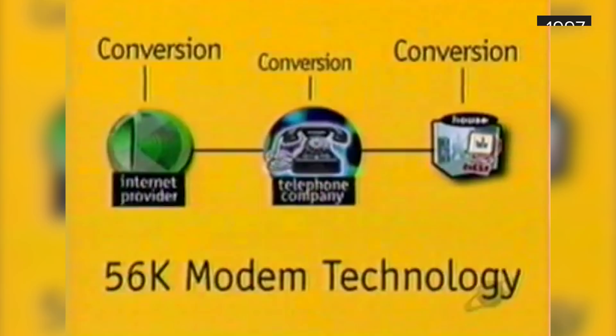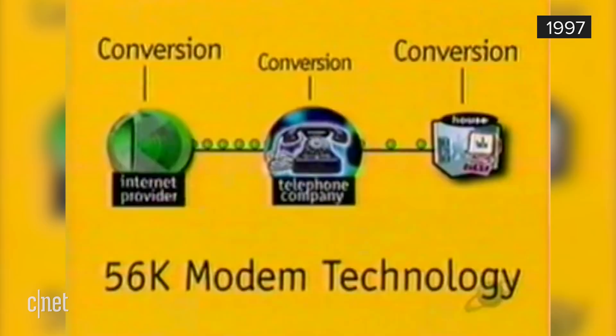This is the way information travels across the internet today. There are three different conversions from analog to digital signals between your internet service provider, your telephone company, and your computer.